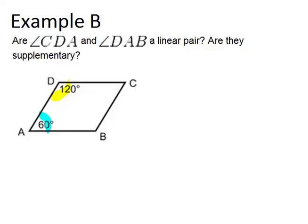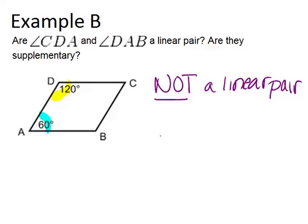Because these angles are not on the same line and sharing a common ray, they are not a linear pair. A linear pair will always look like what it looked like in the previous example, where you have a straight line that's been divided into two parts.